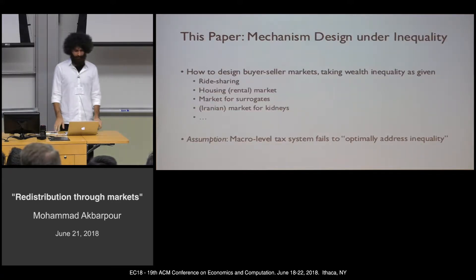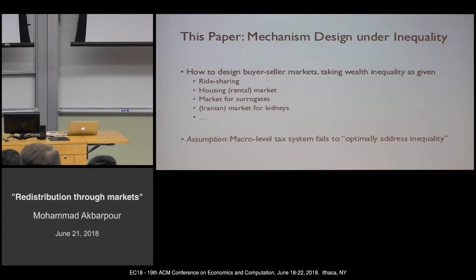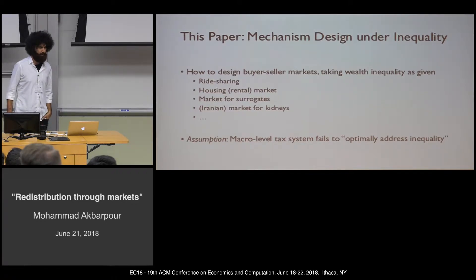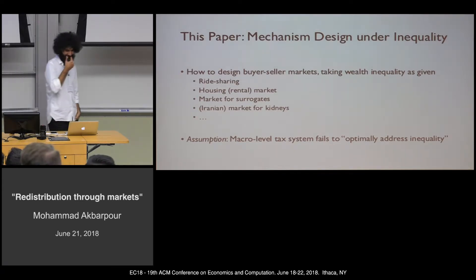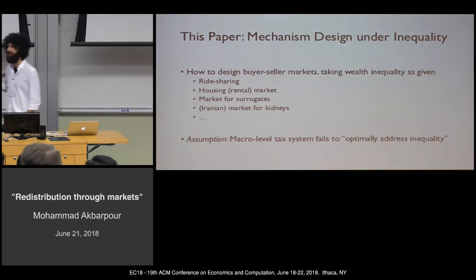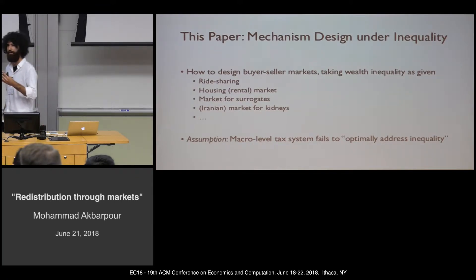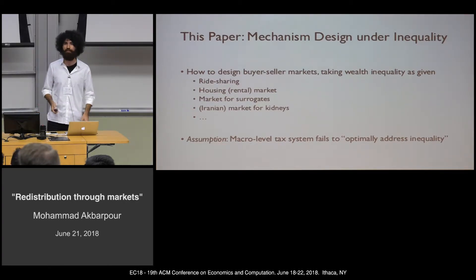This paper introduces a tractable framework to incorporate inequality into mechanism design. As a first question, we ask how to design buyer-seller markets taking wealth inequality as given. Applications include ride-sharing, housing rental markets, markets for surrogates, and kidney markets. Iran is the only country in the world with a legal market for kidneys, and sellers are substantially poorer than buyers—making it a direct application of this framework.